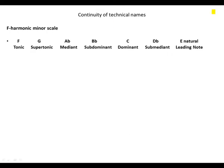And here's F harmonic minor scale. F: Tonic. G: Supertonic. A-flat: Mediant. B-flat: Subdominant. C: Dominant. D-flat: Submediant. E-natural: Leading Note.